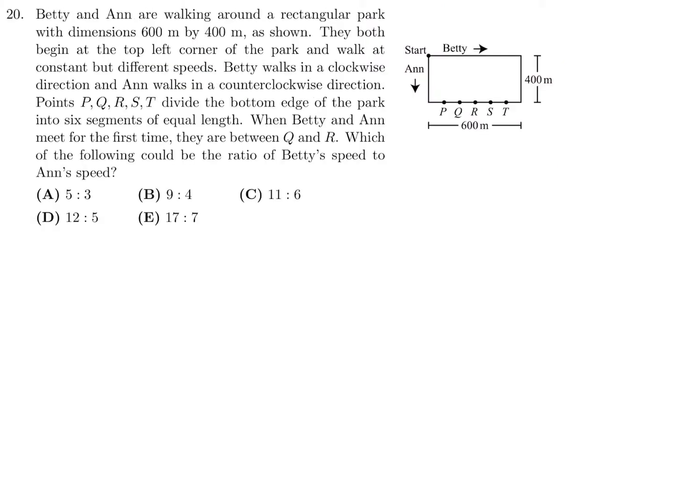Betty and Ann are walking around a rectangular park with dimensions 600 by 400 as shown. They both begin at the top left corner of the park and walk at a constant but different speed. Betty walks in a clockwise direction and Ann walks in a counterclockwise direction. Points P, Q, R, S, T divide the bottom edge of the park into six segments of equal length. When Betty and Ann meet for the first time, they are between Q and R. Which of the following could be the ratio of Betty's speed to Ann's speed? So Q and R is right here. Now I don't know where they are, but they're going to meet somewhere in between.